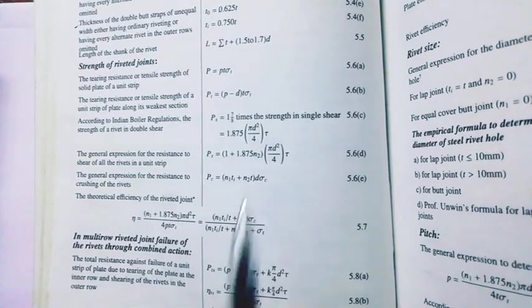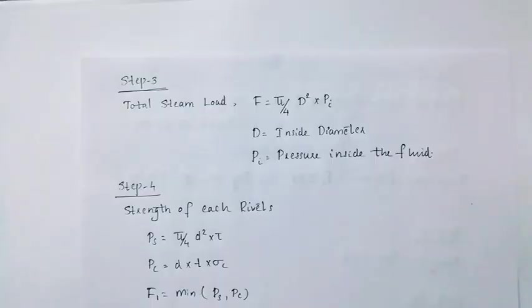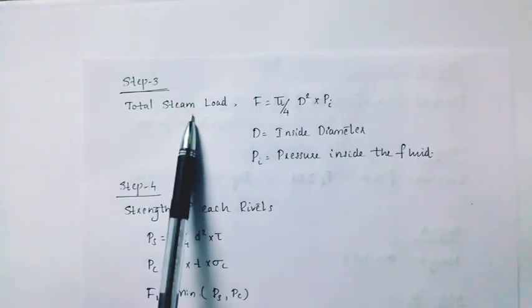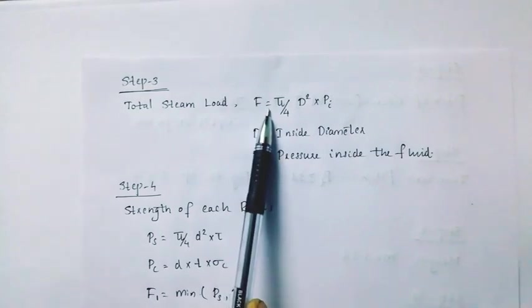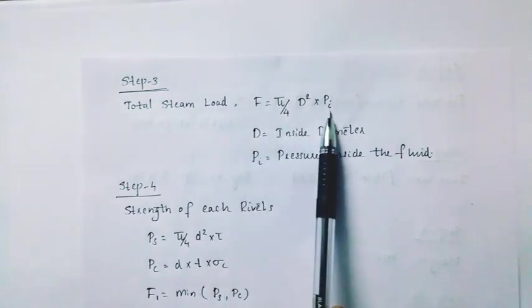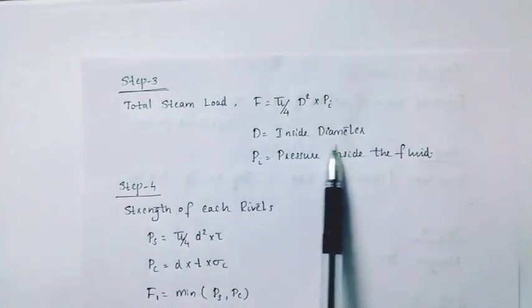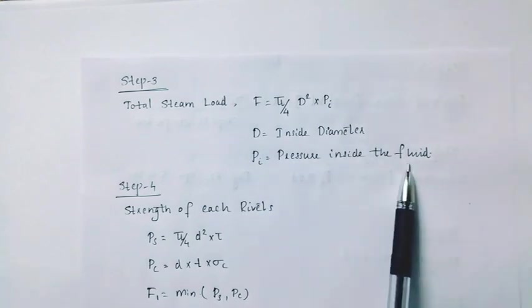Step 3. Total steam load f is equal to pi by 4 d square into pi. d equal to inside diameter, pi equal to pressure inside the fluid.